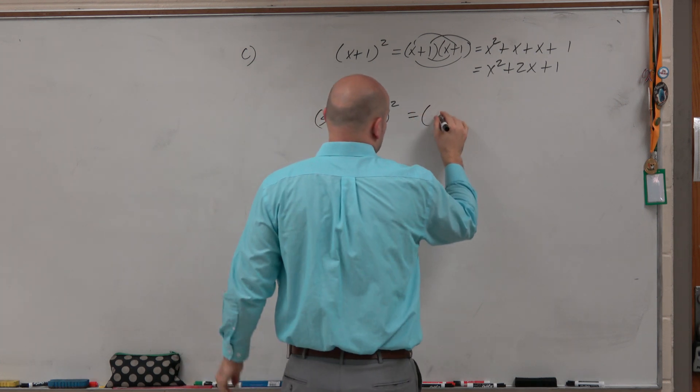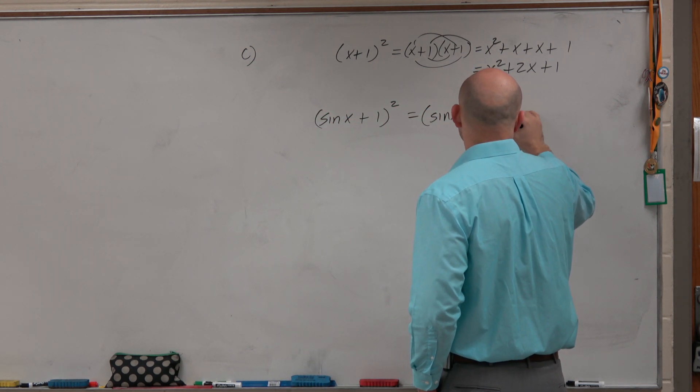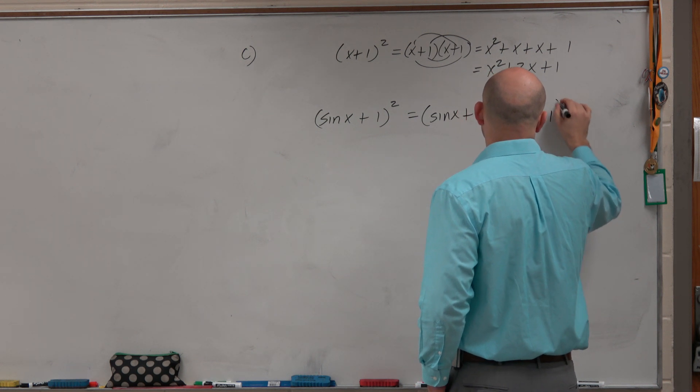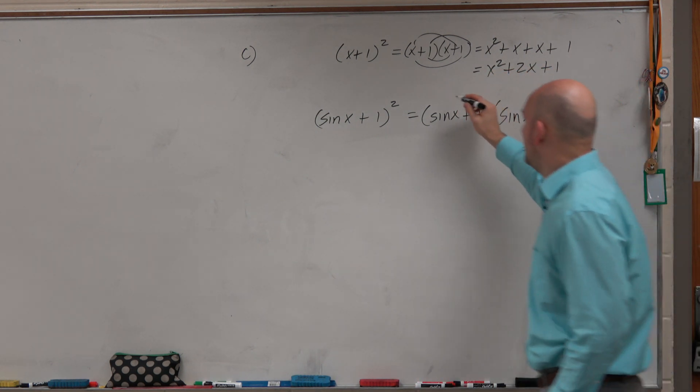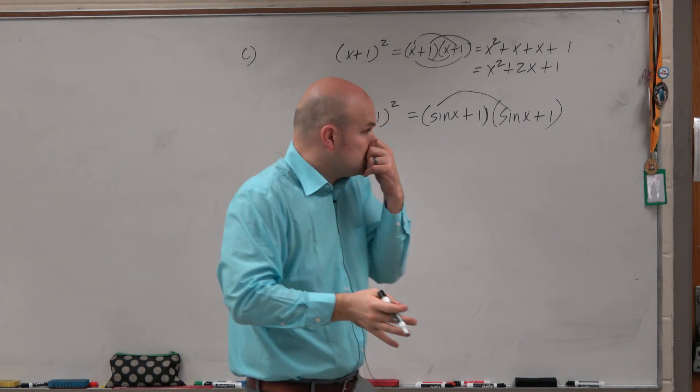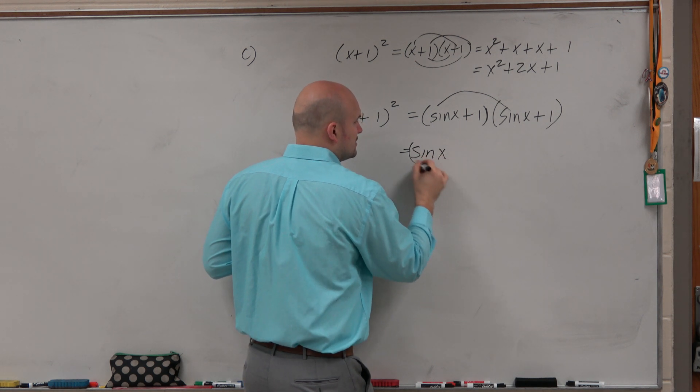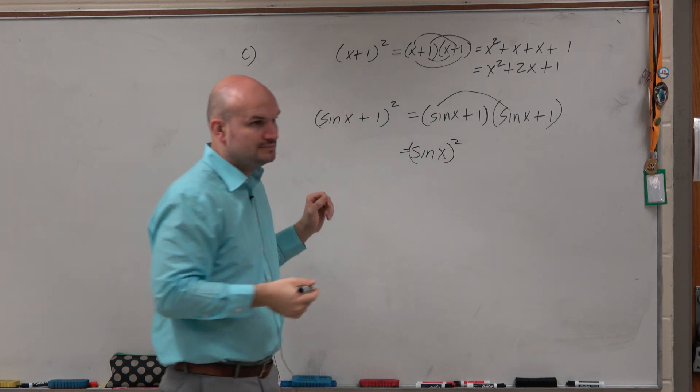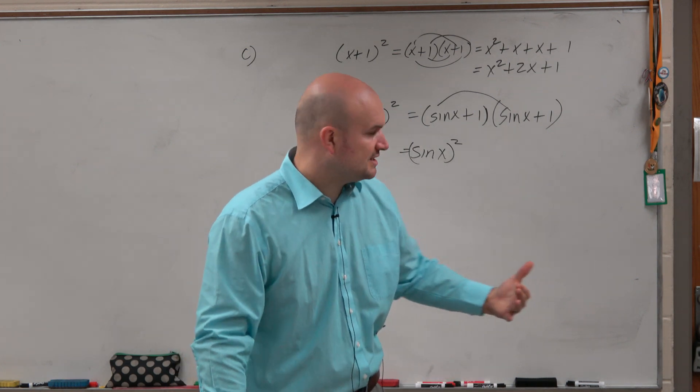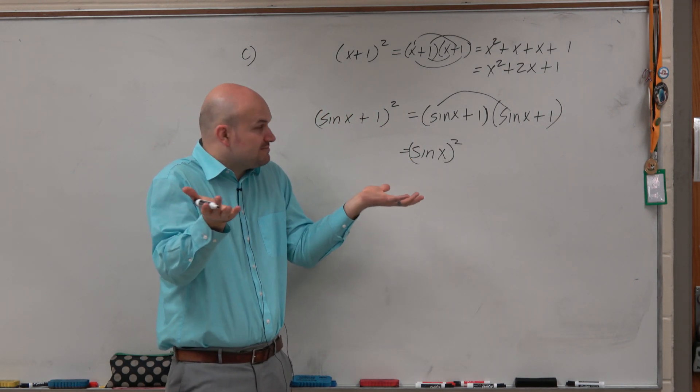Like that is sine of x plus 1 times sine of x plus 1. So when we multiply sine of x times sine of x, that is the product of sine of x times sine of x, which is really just going to be sine of x quantity squared. And I'll show you a simplified version in a second. But it's really just sine of x times sine of x, which is then squared.